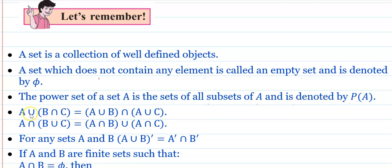Next, the distributive property: A union (B intersection C) equals (A union B) intersection (A union C) — that is, union is distributed over intersection. And intersection is distributed over union: A intersection (B union C) equals (A intersection B) union (A intersection C).